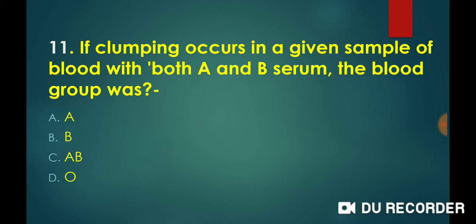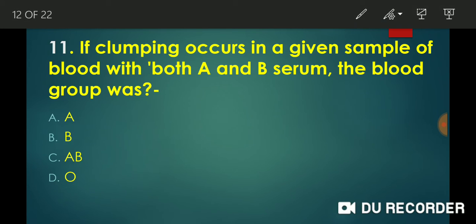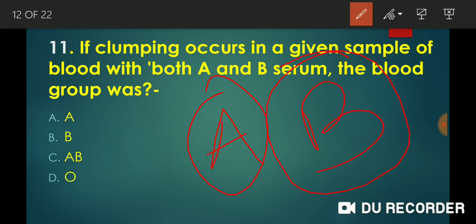If clumping occurs in a given sample of blood with both A and B serum, what is the blood group? If a blood sample is clotted by both A serum and B serum, then the blood group must be AB. If clotted by only A serum it is A, only B serum it is B, but clotted by both means the answer is AB.